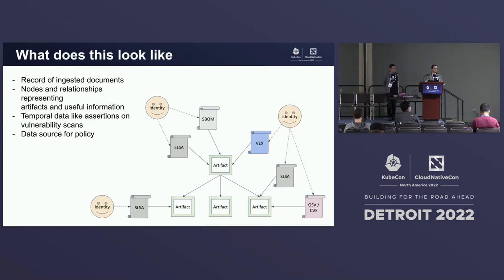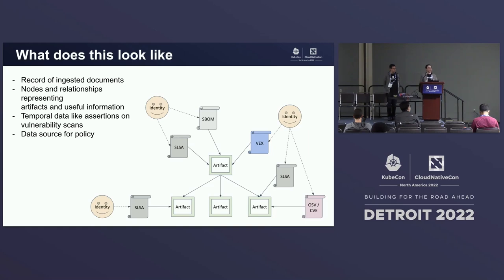We include things like VEX and who signed off on that VEX. It's a record of ingested documents — we parse them to generate relationships between them, making it easier to query what depends on what, who attested to what. We also plan to include temporal data like vulnerability scan assertions, because you might have scanned an artifact a year ago, but new heuristics or data feeds since then might show it's now vulnerable. All of this can be a data source for policy decisions on things like how software gets into production.